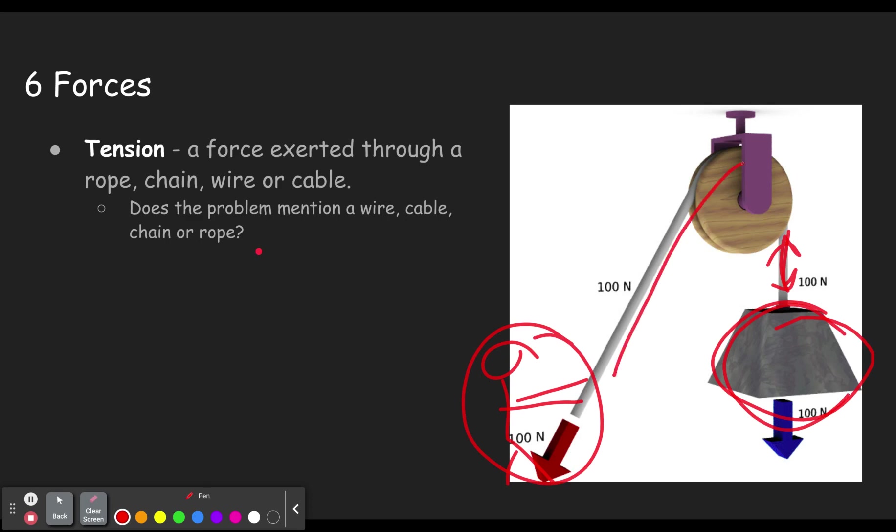So but anytime you see a rope, the fact that this little bit of rope pulls on this little bit of rope pulls on that little bit of rope, and so you've got 100 newtons of tension in this rope, each little bit pulling on the bit next to it, that's the idea of tension.